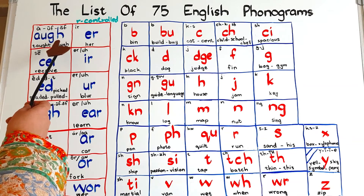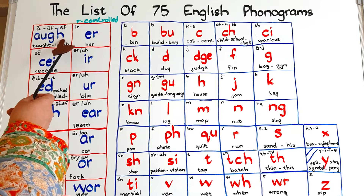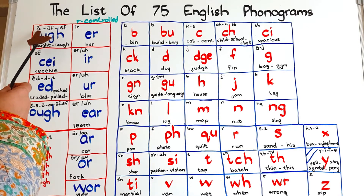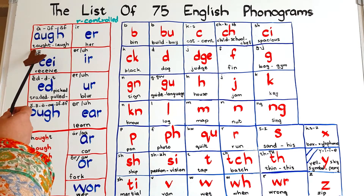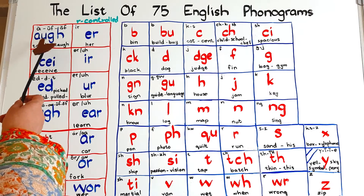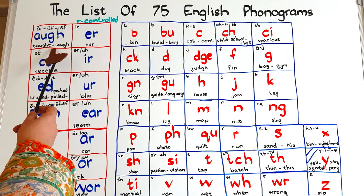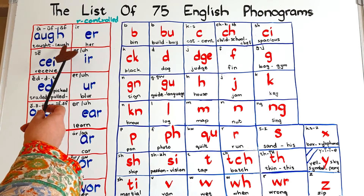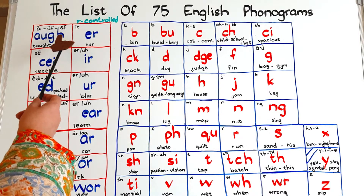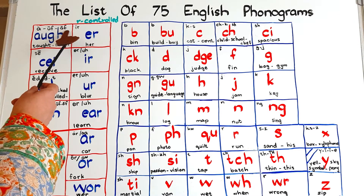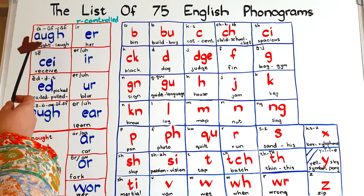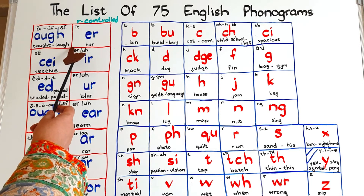This is a four-letter phonogram and it may say the broad sound of vowel A, that is 'ah', as in the word 'taught'. It may also say 'aff' as in the word 'laugh'. In American English they pronounce this word as 'laugh', so I have also written this pronunciation: 'laugh'.